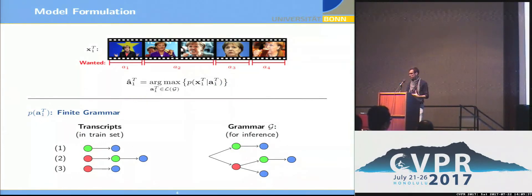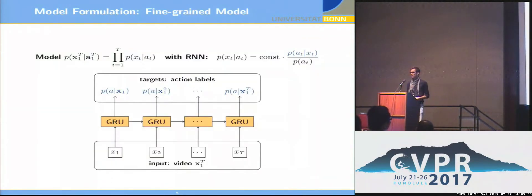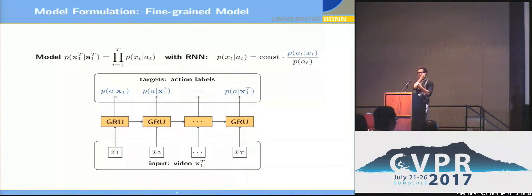So the problem is already a bit simplified now. So we have to look how we actually model this probability that is remaining, this P of video given labels. We make a Markov assumption and say it's the product of all frames of probability of frame given action label, but we want to use an RNN to model this, so we need a posterior probability. Simple trick, we apply a Bayes rule to obtain action label given video frame, and we need to divide by the prior in order to get something that is proportional to the original probability.